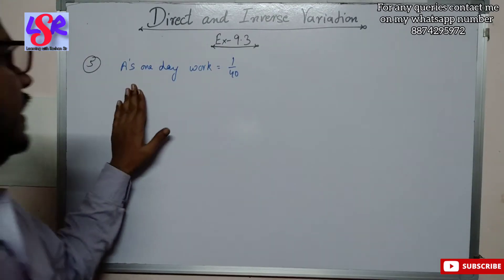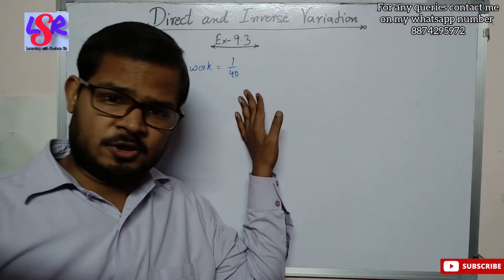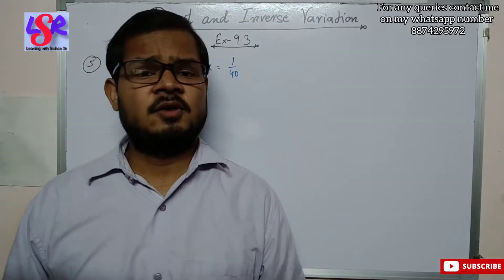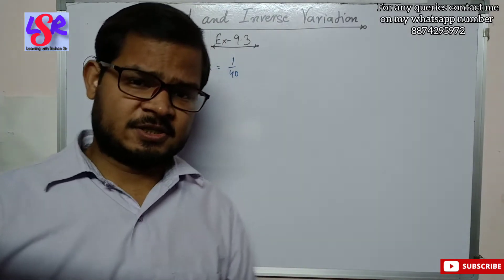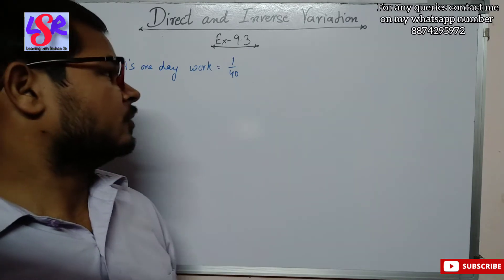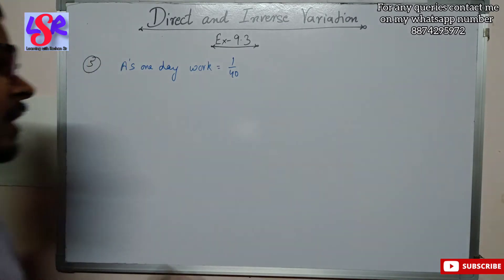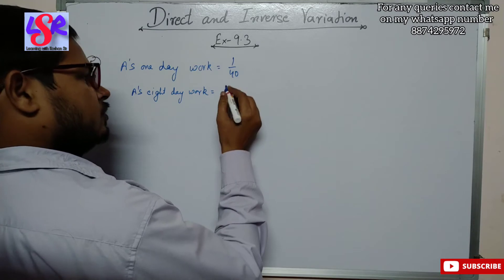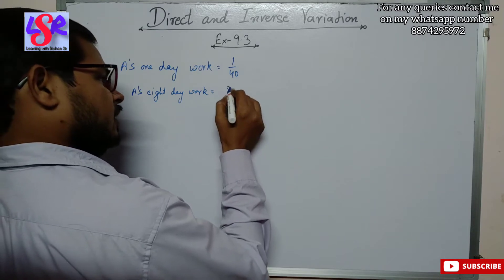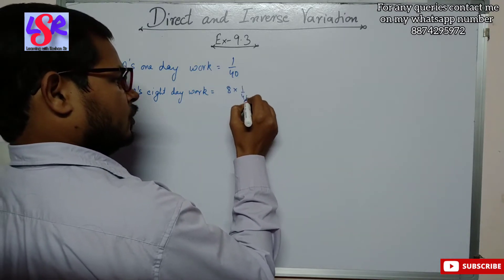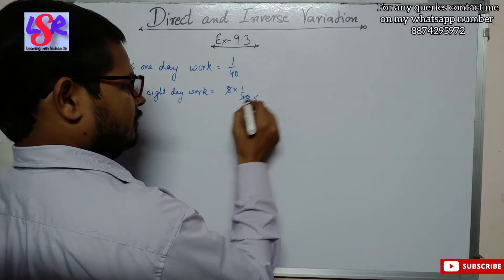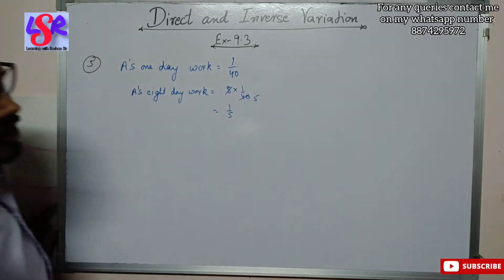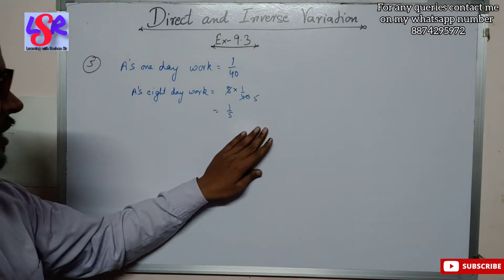A's one day work is 1 upon 40, since A is able to complete the whole work in 40 days. Now A's 8 day work equals 8 into 1 upon 40. We can cancel out 5 times, so this is 1 upon 5. A has completed 1 upon 5 part of the work.